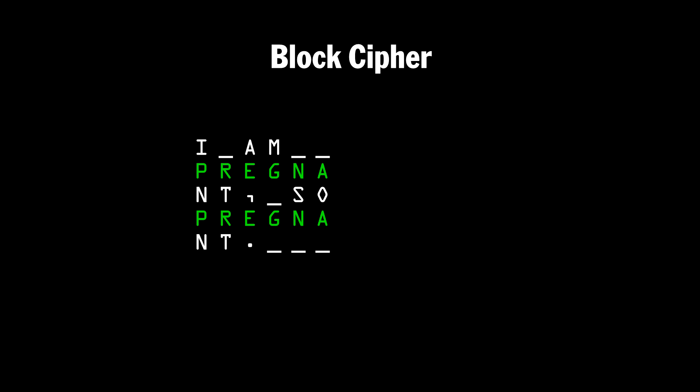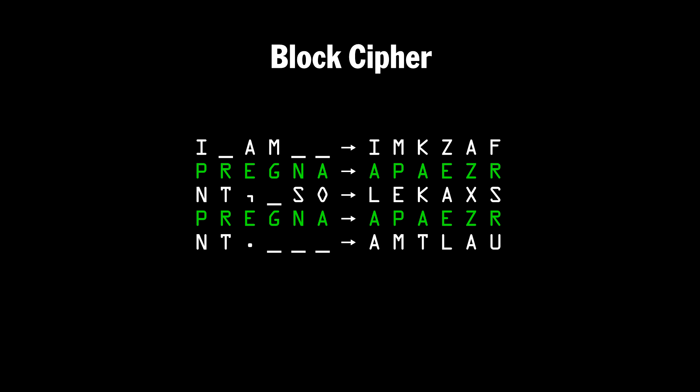So if she sends a longer message where certain lines repeat, the result of the encryption would look something like this. Notice that since the second and fourth lines are the same text, being encrypted with the same key, it results in the same encrypted text. This gives Eve a clue — any time you see part of an encrypted message repeated, it gives the hacker a clue as to what the original message might be.